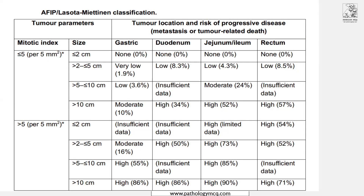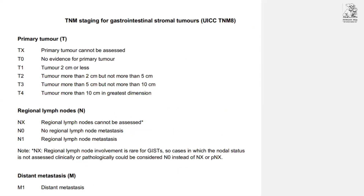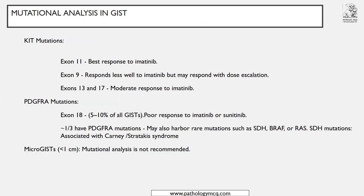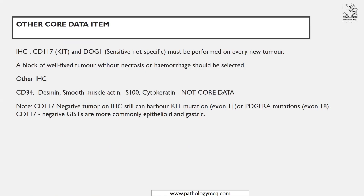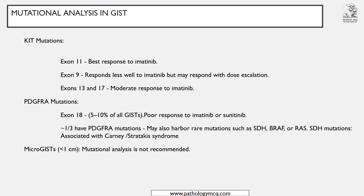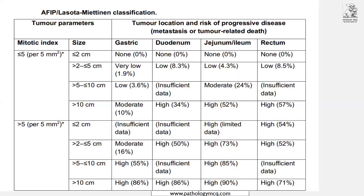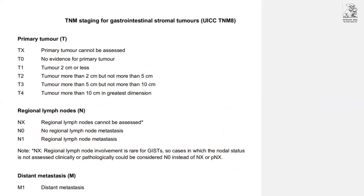For TNM staging in GIST, the T categories mirror the AFIP size categories: T1 (<2 cm), T2 (2–5 cm), T3 (5–10 cm), T4 (>10 cm), plus regional lymph node and distant metastasis involvement. TNM for GIST is straightforward. To summarize: remember CD117 and DOG1 as core IHC data; CD117-negative GISTs can still harbor c-Kit or PDGFRA mutations; know which exons respond to imatinib; and know AFIP grading and TNM staging.